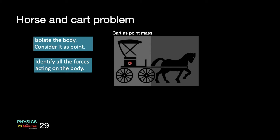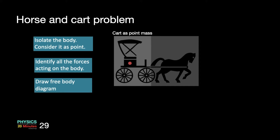Now we list down all the forces working on the cart. The cart's weight works in the downward direction; the normal reaction from the ground works in the upward direction; and since it is connected to the horse by a rod, when the horse tends to pull, there will be tension generated in the rod working in the forward direction. So we can draw the free body diagram: weight of the cart working downward, normal reaction on the cart working upward, and the force of tension by the horse on the cart working towards the right side.